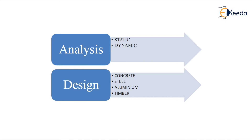STAAD.Pro software supports 4 types of design. First one is concrete design, second one is steel design, third is aluminium design, and fourth one is timber design. In India, we mostly use concrete design and steel design because this software supports Indian standard codes for steel and concrete only. For aluminium and timber, the software will not support Indian standard codes. The term design means we have to find out the appropriate size of section, material, and strength of the material. In concrete design, we find out the size of section and reinforcement, grade of concrete, and grade of reinforcement. In steel design, we find out the grade of steel and the size of section to resist a particular load.